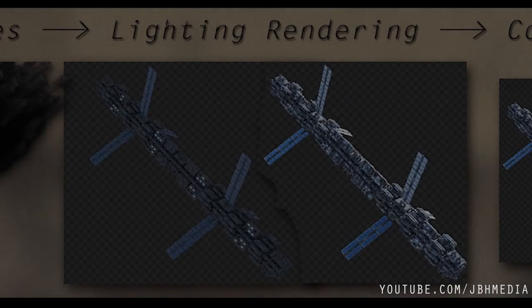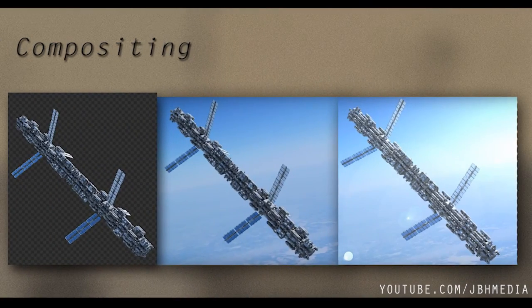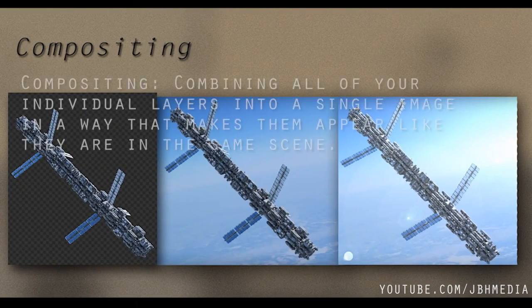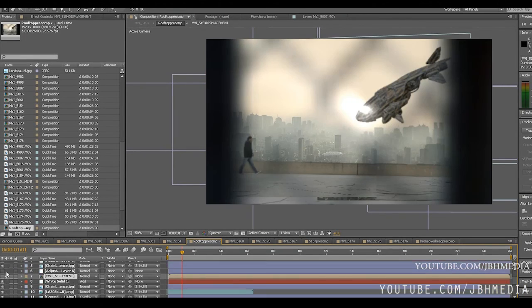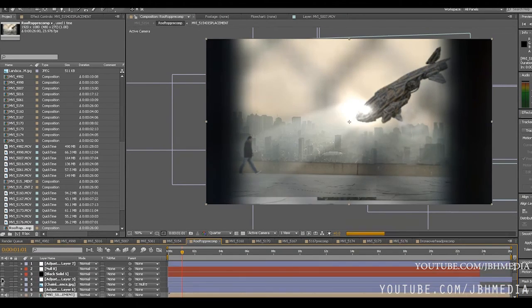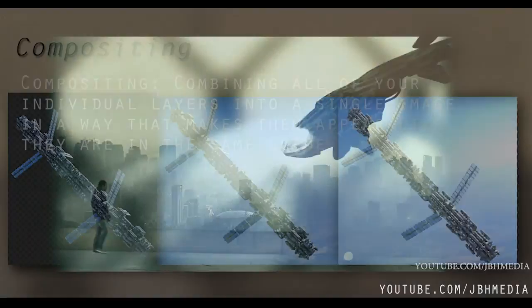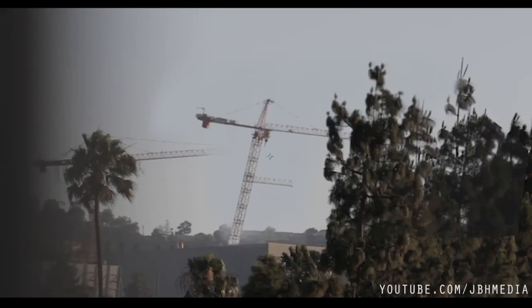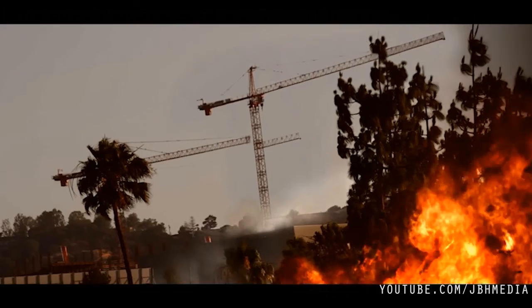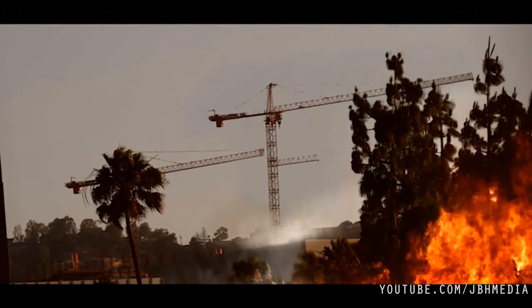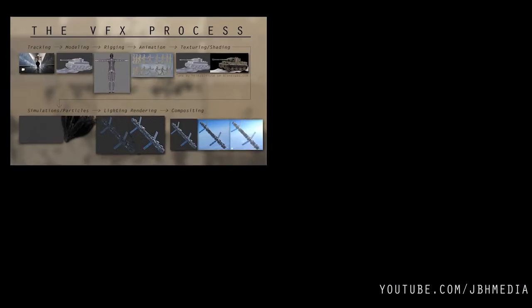Finally, the last step of the visual effects process is compositing. Compositing is the process of taking all your layers — including 3D renders, simulations, matte painting, stock footage, and anything else you have — and combining them into a final shot that is seamlessly integrated into your scene.